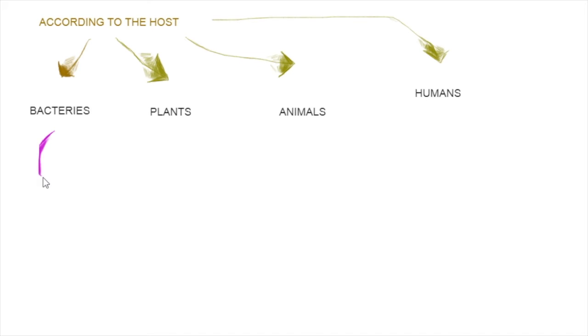Or according to their hosts, that is, the kind of living creatures that they can infect. These ones, the complex ones, can only infect bacteria. While the ones that look like a cylinder and have no cover, only infect plants.